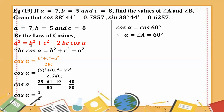b squared equals a squared plus c squared minus 2ac cos beta. Also, cos beta equals a squared plus c squared minus b squared, divided by 2ac.